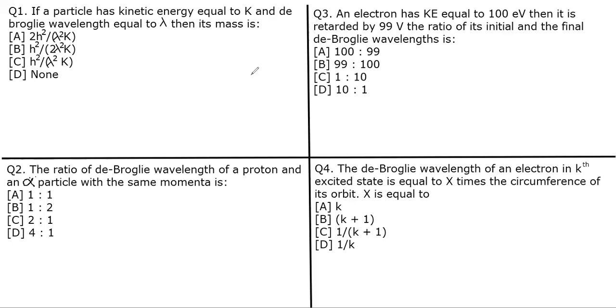Hello students, welcome to another DPP on atomic structure. This is based on de Broglie's hypothesis and its connection to the Bohr model. Let's attempt the questions. If a particle has kinetic energy equal to K and de Broglie wavelength equal to λ, then its mass is...